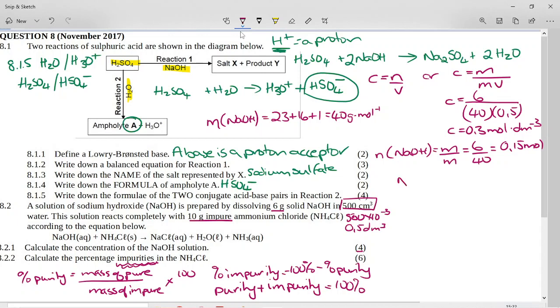Now we go to the balanced equation and we look at our mole ratios. One mole of sodium hydroxide reacts with one mole of ammonium chloride. So if I only had 0.15 moles of sodium hydroxide, the ratio is 1 to 1. I will only end up with 0.15 moles of ammonium chloride reacting with it.